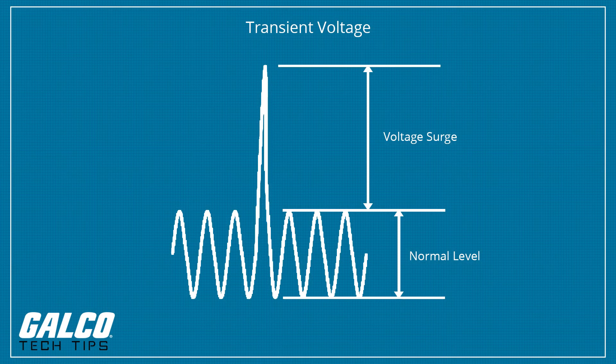A power surge or transient voltage is an increase in voltage significantly above the designated level in a flow of electricity.